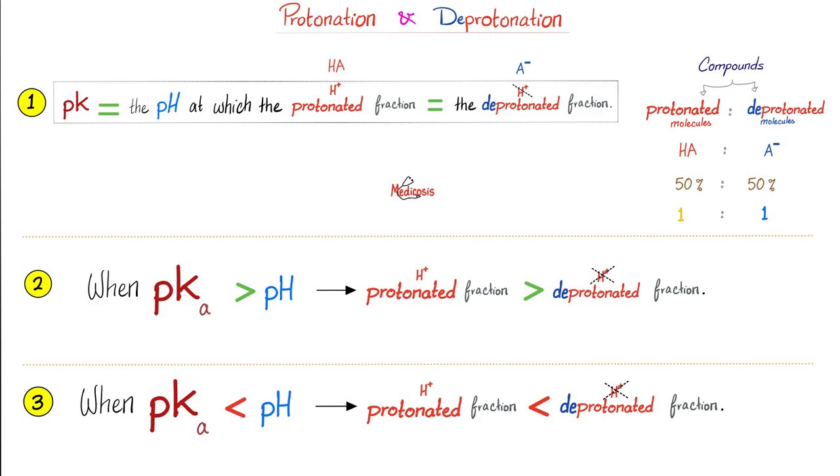There are three rules. Rule number one: pKa is the pH at which half is protonated and half is deprotonated and they equal each other. But what if the pKa is greater than the pH? The protonated fraction will exceed the deprotonated fraction. Conversely, if the pKa is lower than the pH, then the protonated form is lower than the deprotonated form. Always start with the pKa and always start with the protonated. When this is greater than, this is greater than. When this is less than, this is less than. When this is equal, this is equal.